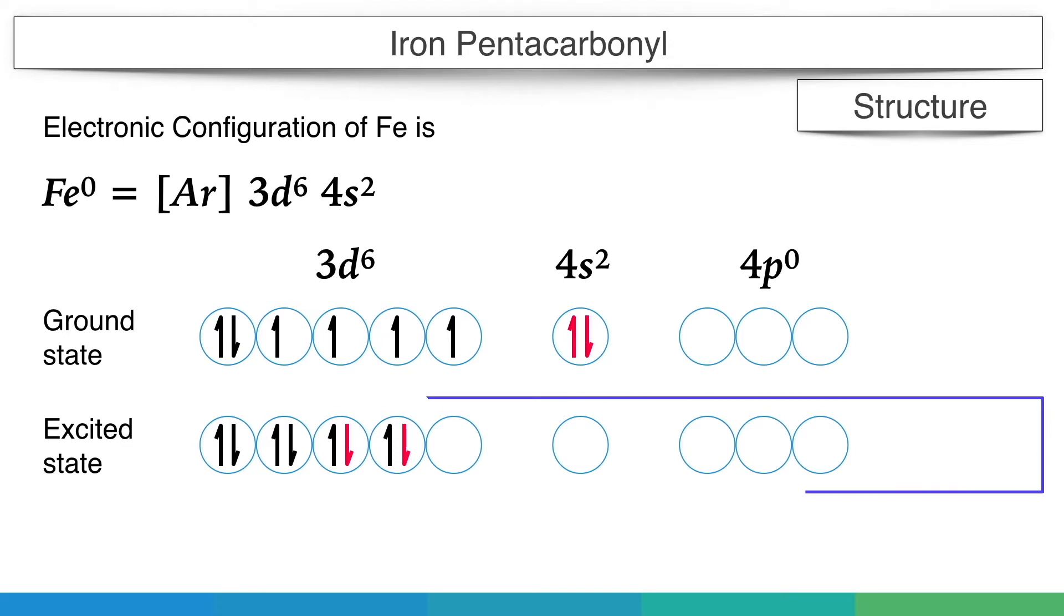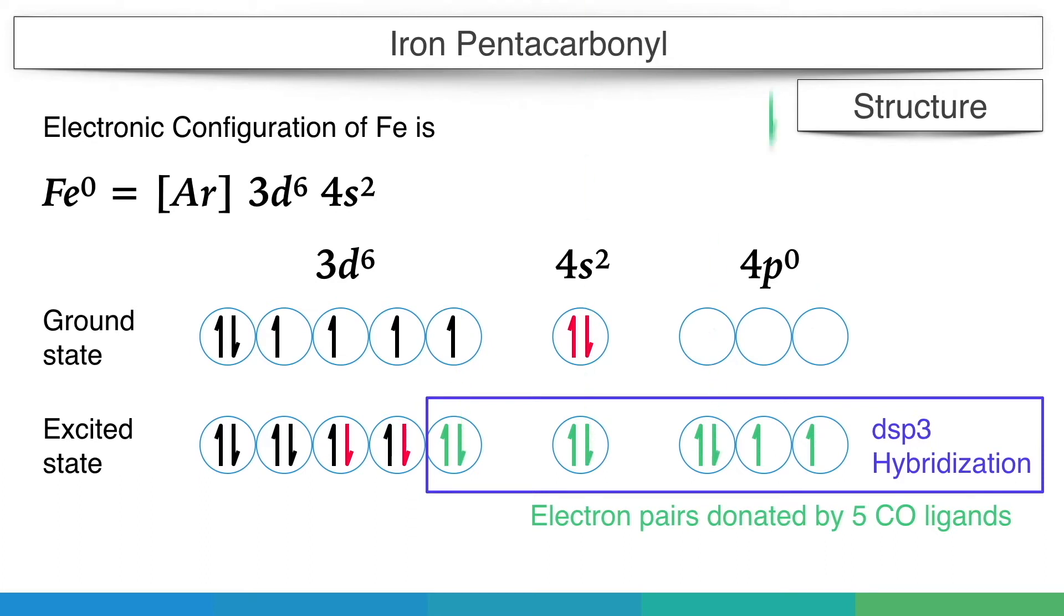So in this case, one d, one s, and three p orbitals combine to make five hybrid orbitals, and therefore it is dsp3 hybridization. Each carbonyl group donates one pair of electrons to iron atom, and these five pairs of electrons are accommodated in the vacant dsp3 hybrid orbitals of iron. As all the electrons are paired, it is diamagnetic.